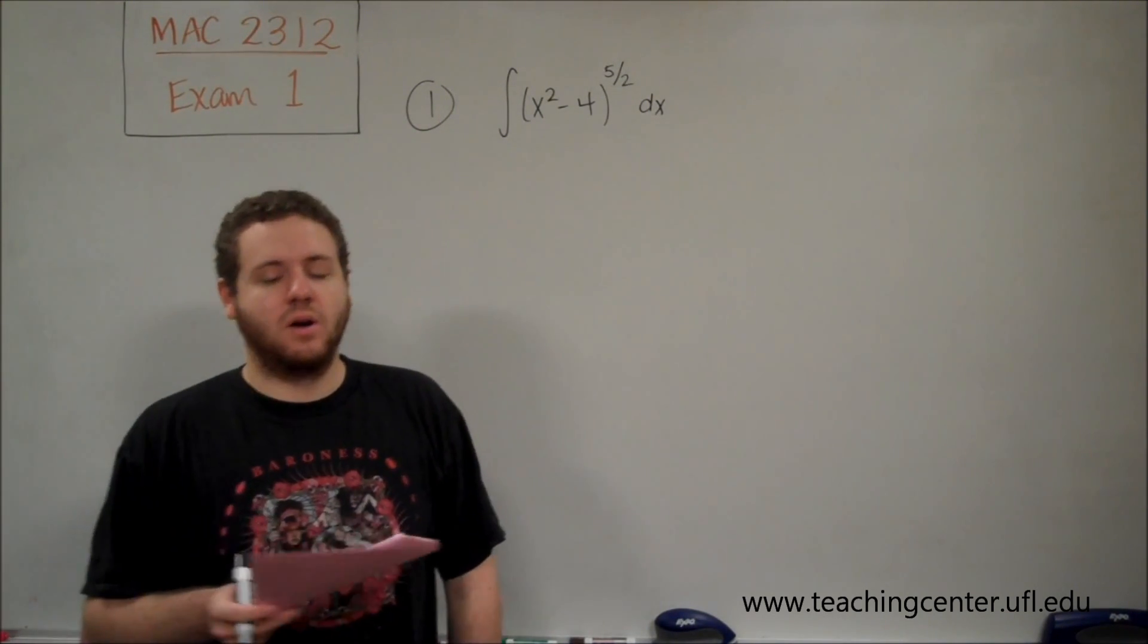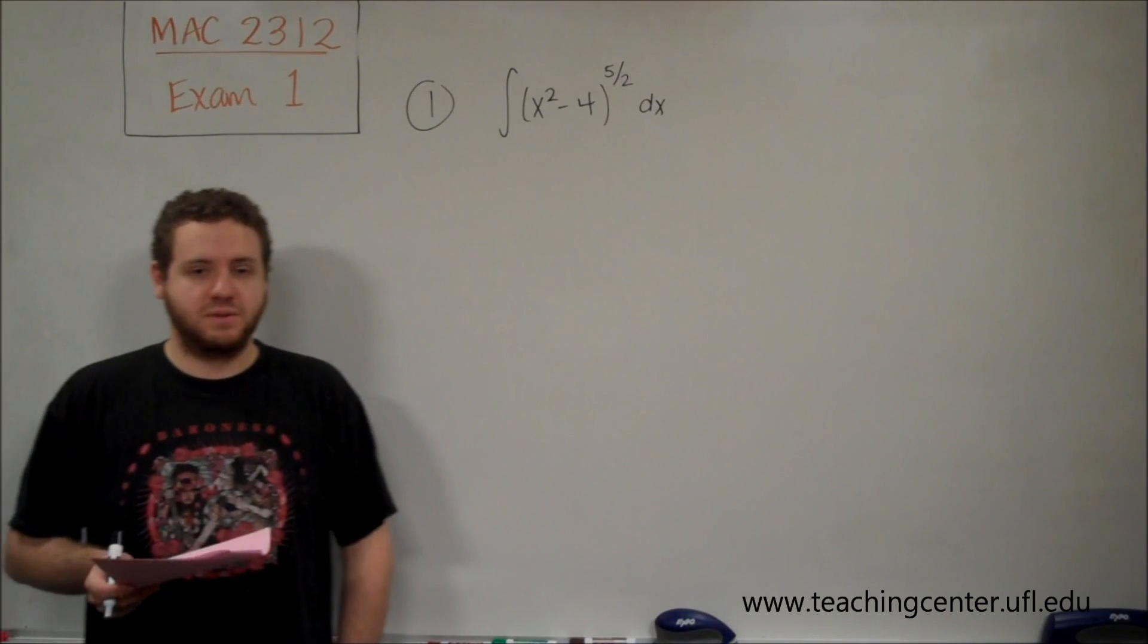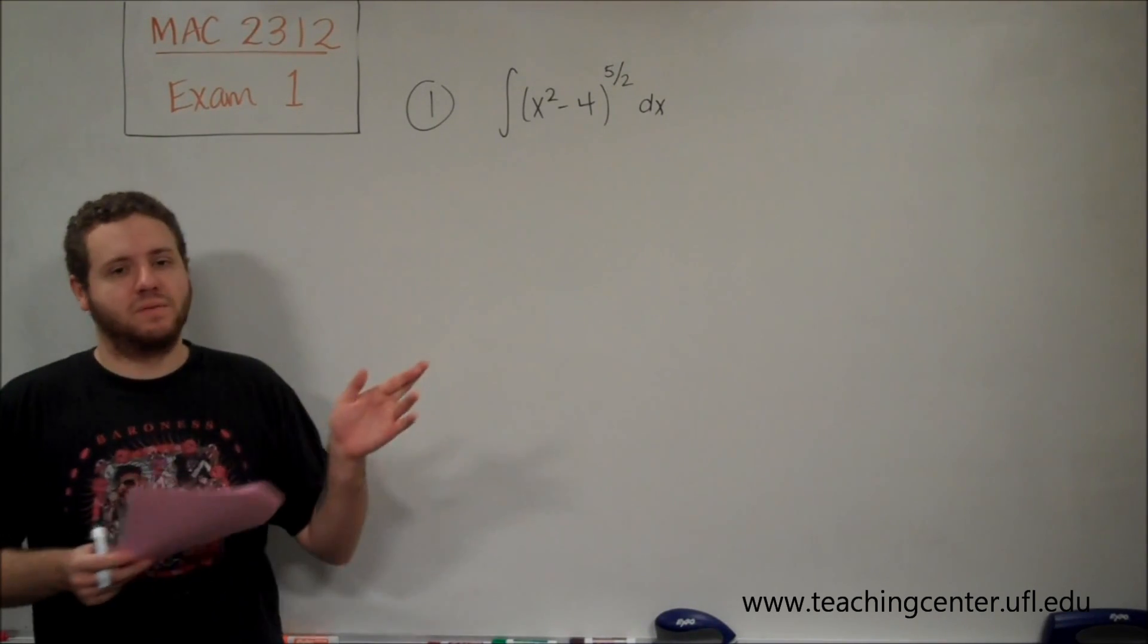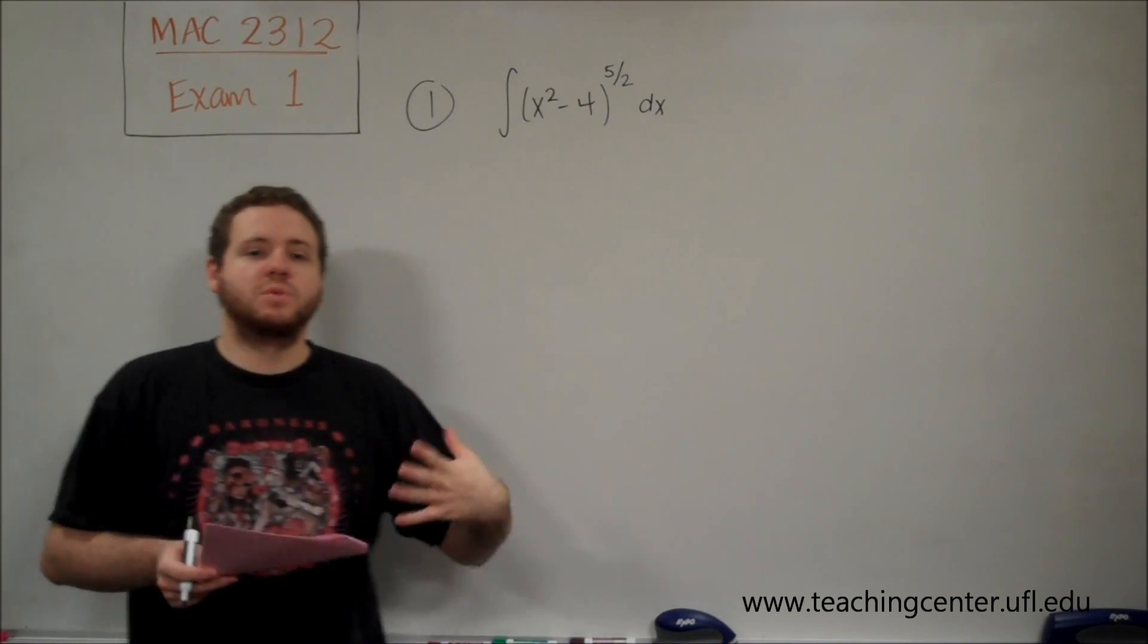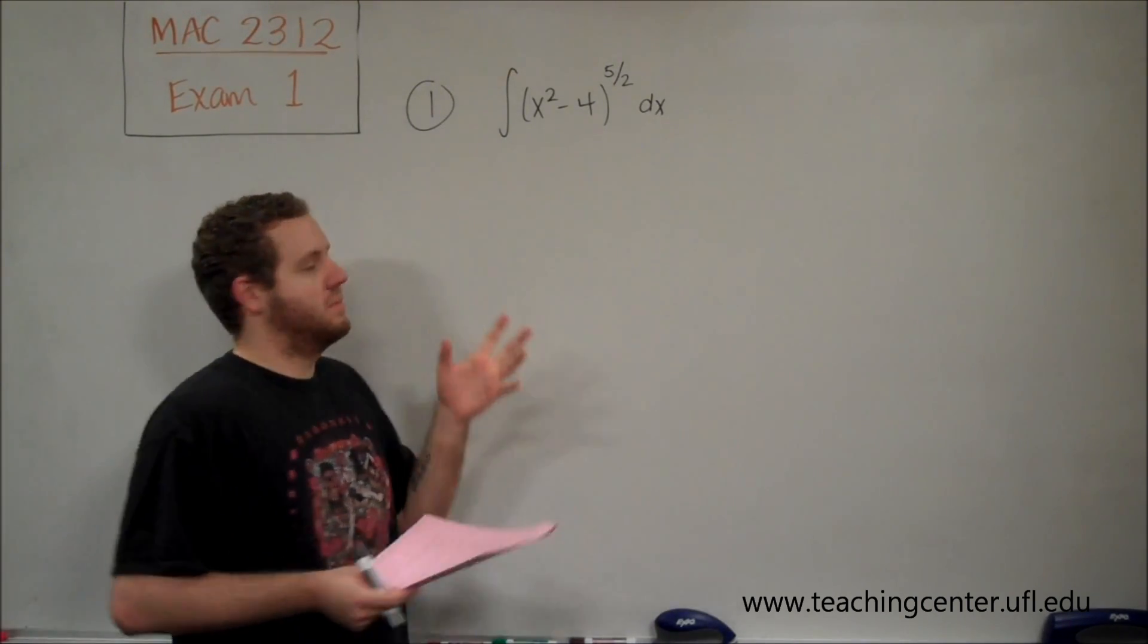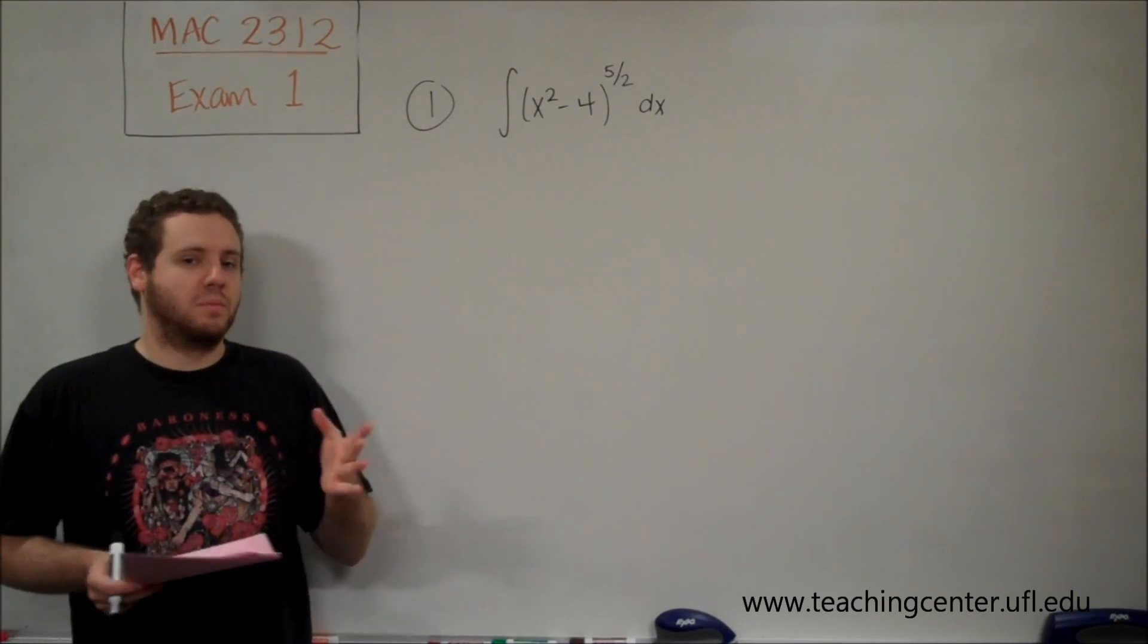So as you can see, our options here are a bunch of trig substitutions. So we just have to think about which one would be the most appropriate to help us solve this problem. I'm sure when you get to the test, you're going to have situations memorized. If I see this form, I'm going to use secant. If I have this form, I'm going to use sine, etc.